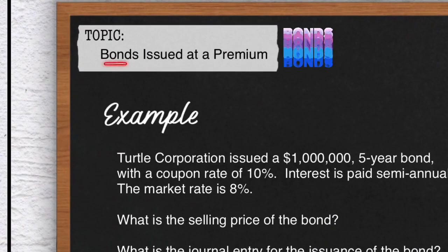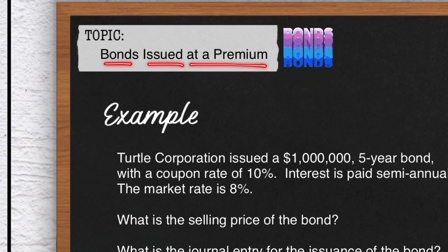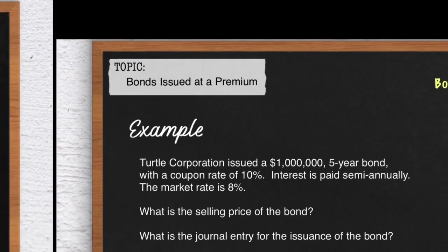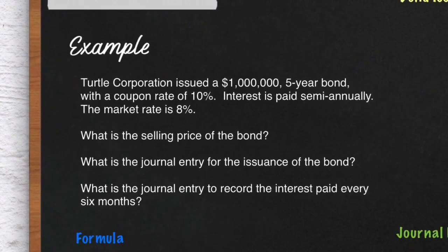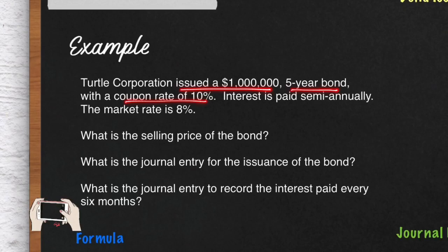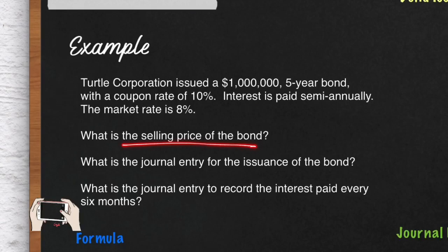Let's talk about bonds issued at a premium. Recall that bonds is basically borrowing money from investors or bondholders. In this example, we have Turtle Corporation — it issued a one million dollar bond for five years, the coupon rate is 10%, the interest is paid semi-annually, and the market rate is 8%. We're going to calculate the selling price of the bond, the journal entry for the issuance, and the journal entry to record interest paid every six months.